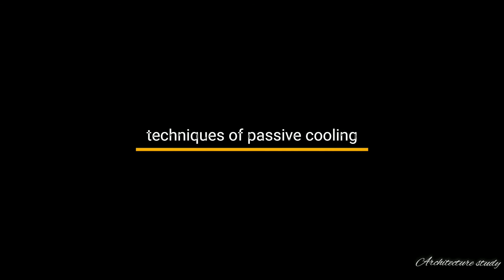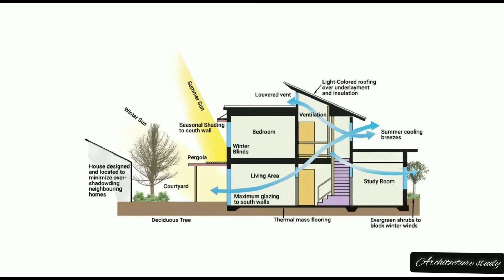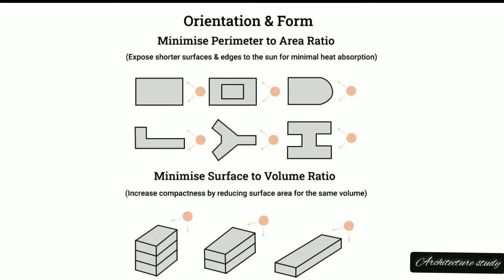Techniques of passive cooling. Passive cooling techniques utilize natural processes, design strategies, and materials to cool a space without the need for active mechanical systems. Here are some common passive cooling techniques. Orientation and form. The orientation and form of a building play crucial roles in architectural design affecting energy efficiency, natural lighting, ventilation, and overall functionality.